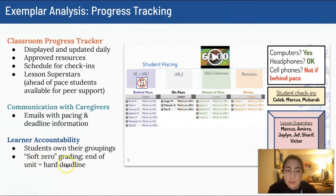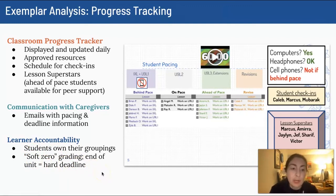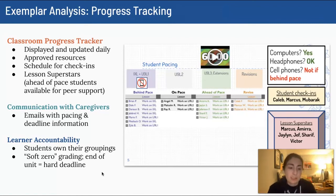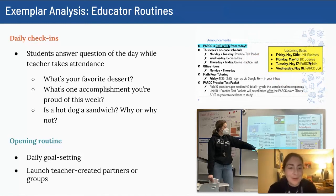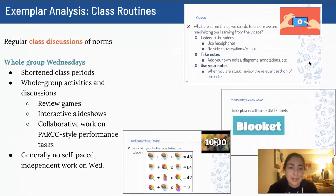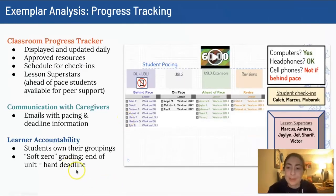I use soft zero grading — as soon as something is past the suggested deadline, it goes in as a zero. This gives students a snapshot of their current grade based on what they have and haven't submitted and mastered, allowing them to take ownership of what they need to do to improve their grade. They also know that the end of the unit is a hard deadline. I always include the unit deadline in the daily announcement slides, and we talk about it every day. There should be no confusion about the point after which any missing work becomes a permanent zero.